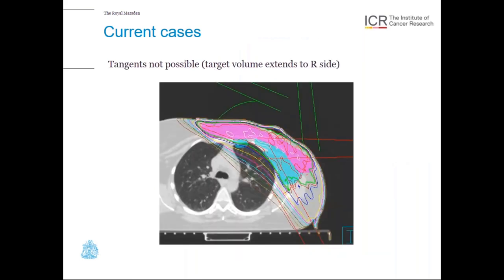Here's an example of a recent patient treated with a bowtie VMAT whose target extended to the right-hand side. We just wouldn't have been able to find a solution for this patient using tangents, and the bowtie VMAT was able to do a pretty good job in this case.